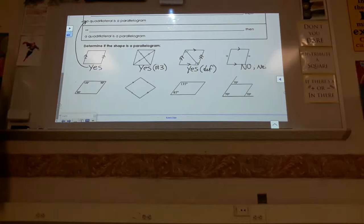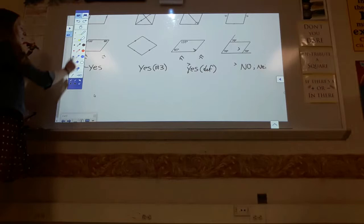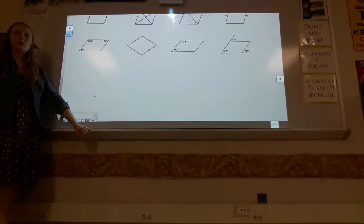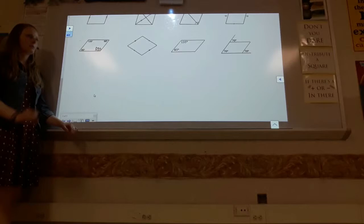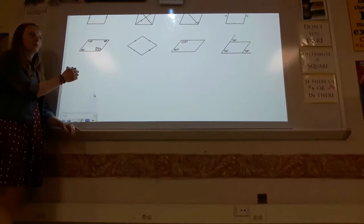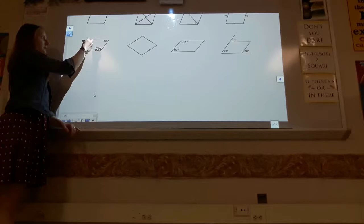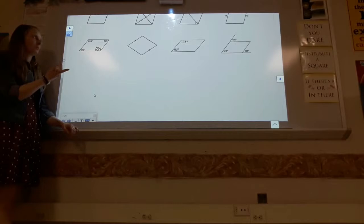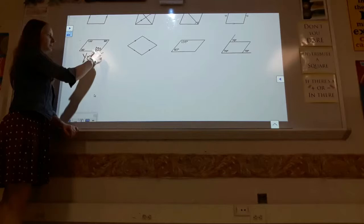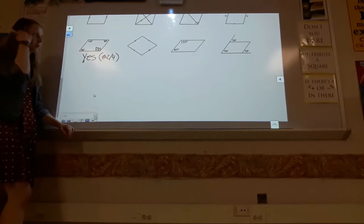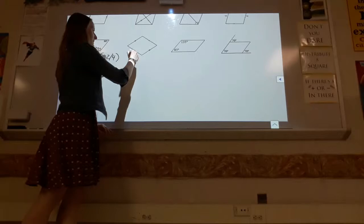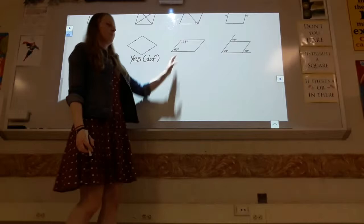The next shape — quadrilaterals add up to 360 degrees, so we can find the missing angle, which is 120. Now we have both pairs of opposite angles congruent, or we can verify that consecutive angles are supplementary. Either way, this is a parallelogram. The shape after that shows both pairs of sides parallel — yes, parallelogram by definition.